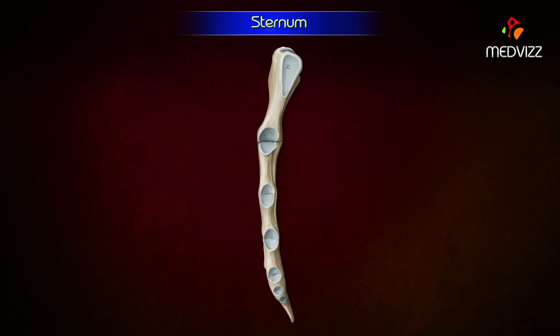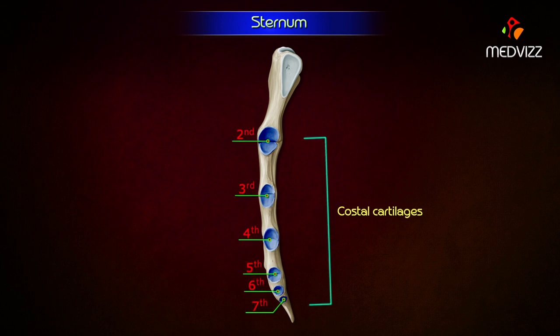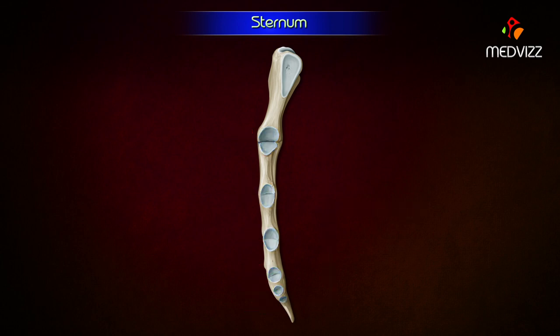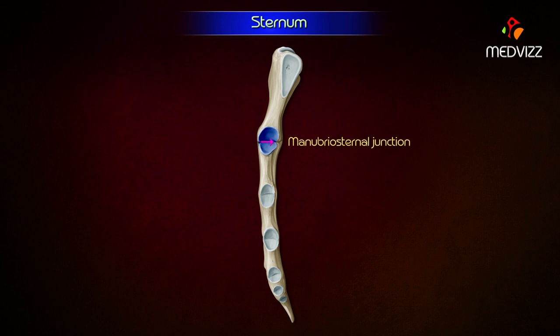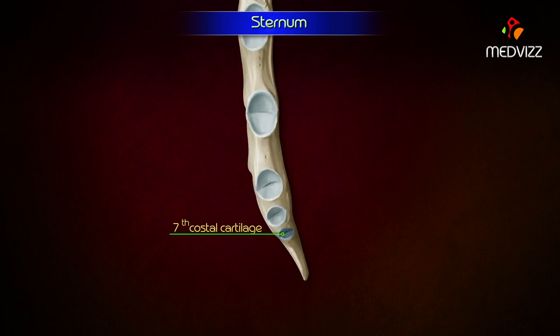Its lateral border articulates with the second to the seventh costal cartilages to form synovial joints. Strictly speaking, the second costal cartilage articulates at the side of the manubrio-sternal junction and the seventh costal cartilage articulates at the xiphi-sternal junction.